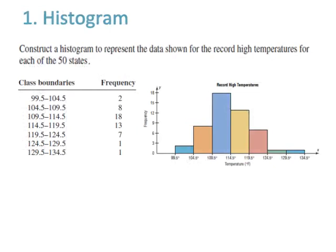Number one is histogram. Construct a histogram to represent the data for the record high temperatures for each of the 50 states. There are 7 class boundaries with a width of 5 and total frequency of 50. Class boundaries are given on the x-axis and frequency on the y-axis, ranging from 99.5 to 134.5.